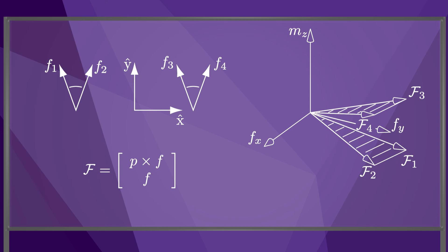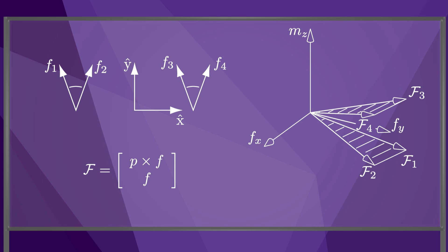Adding another friction cone creates a corresponding wrench cone with positive moments. The set of all wrenches that can be transmitted through the two contacts is the positive span of the four wrenches at the edges of the friction cones. We call this a composite wrench cone, composed of wrenches due to multiple contacts.